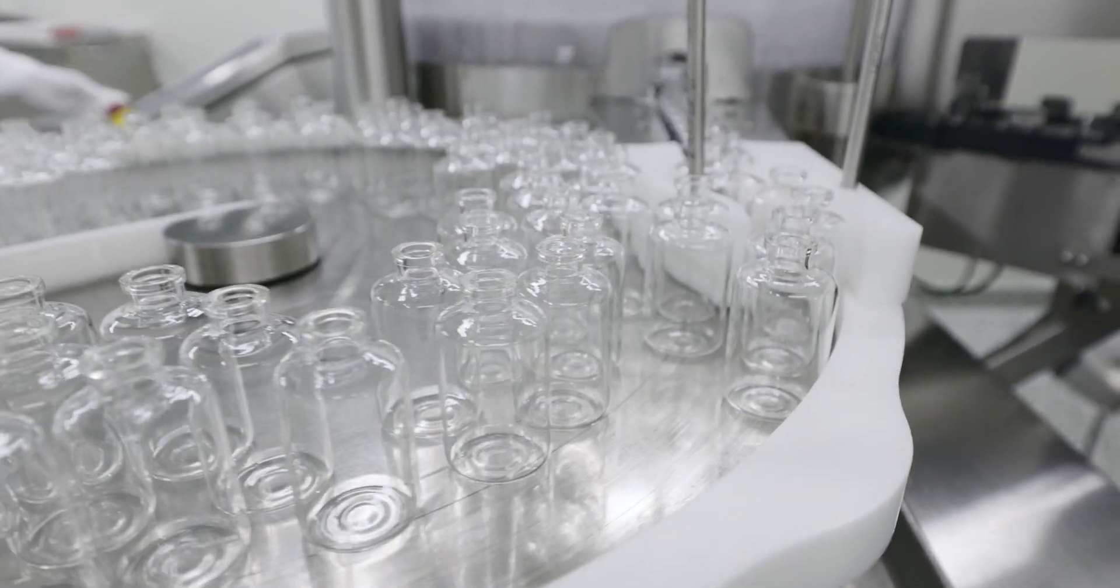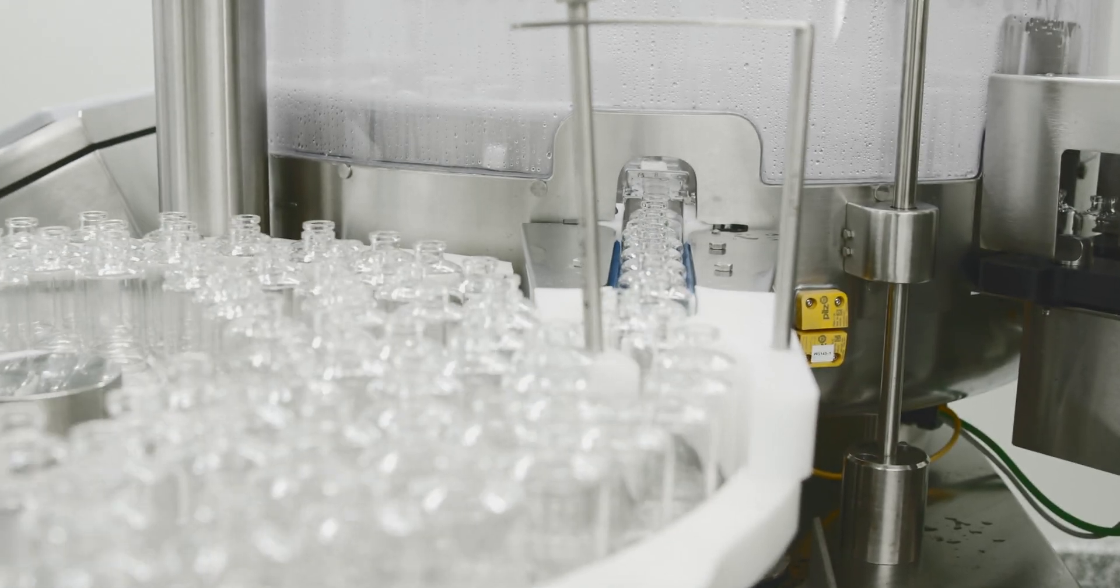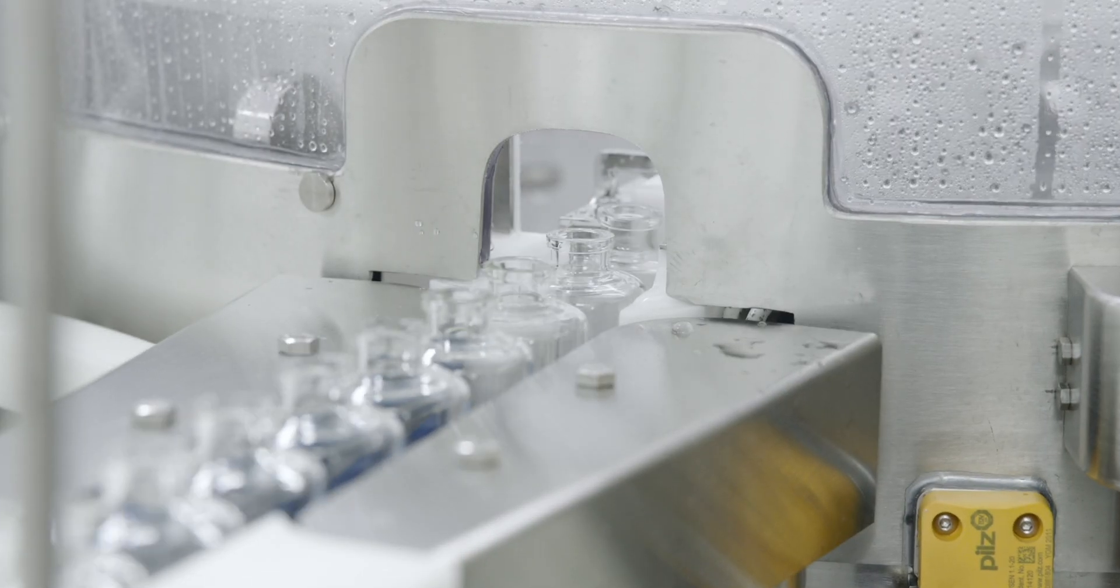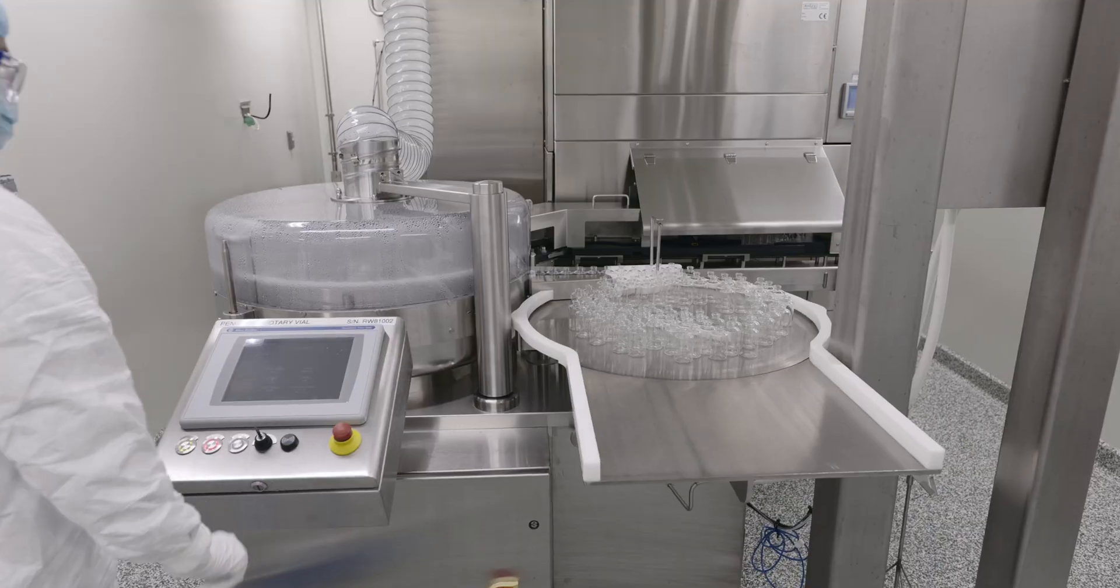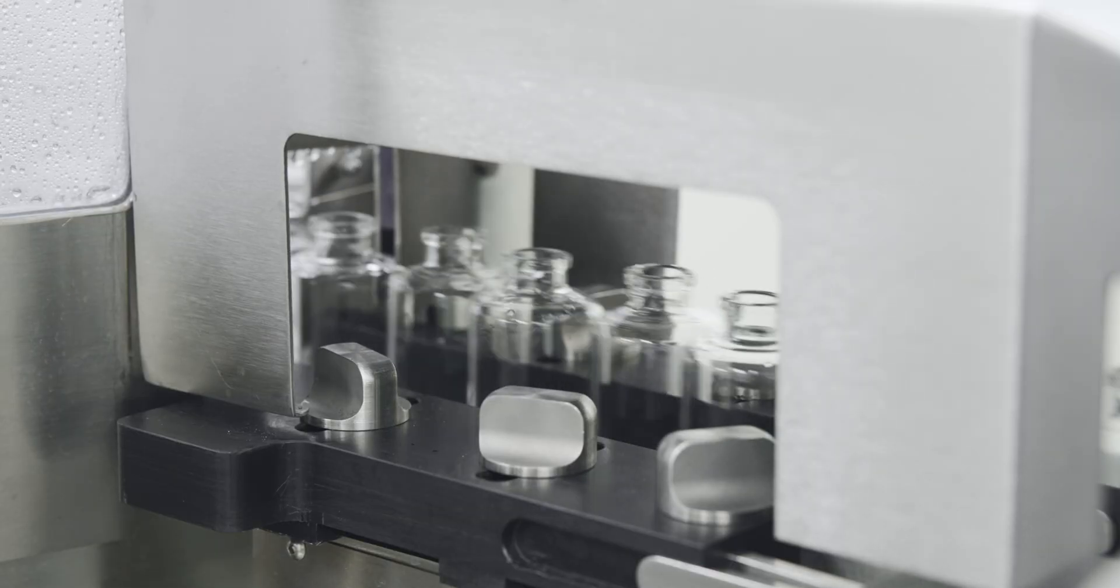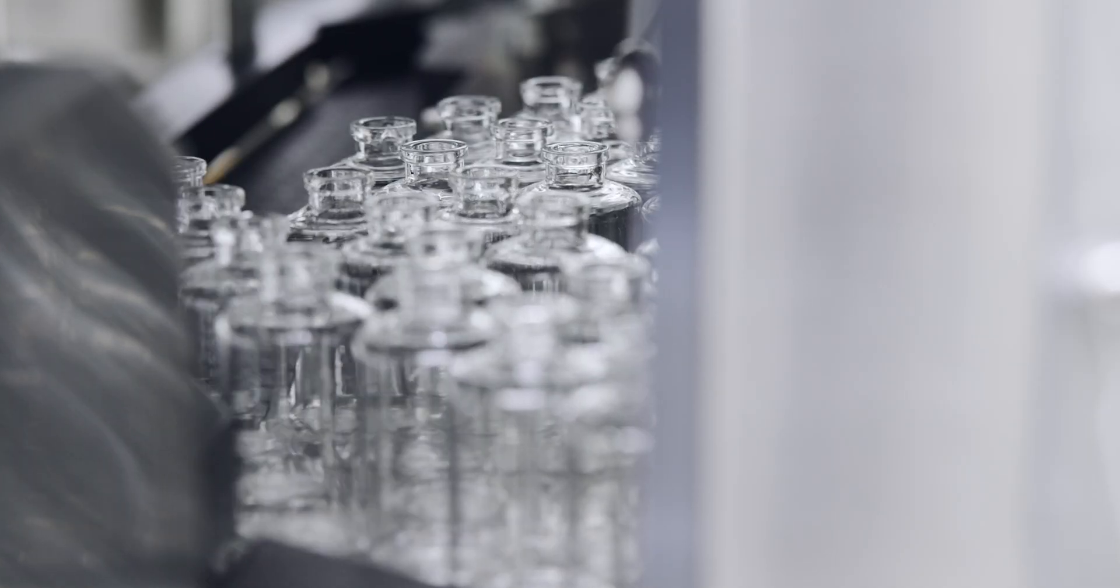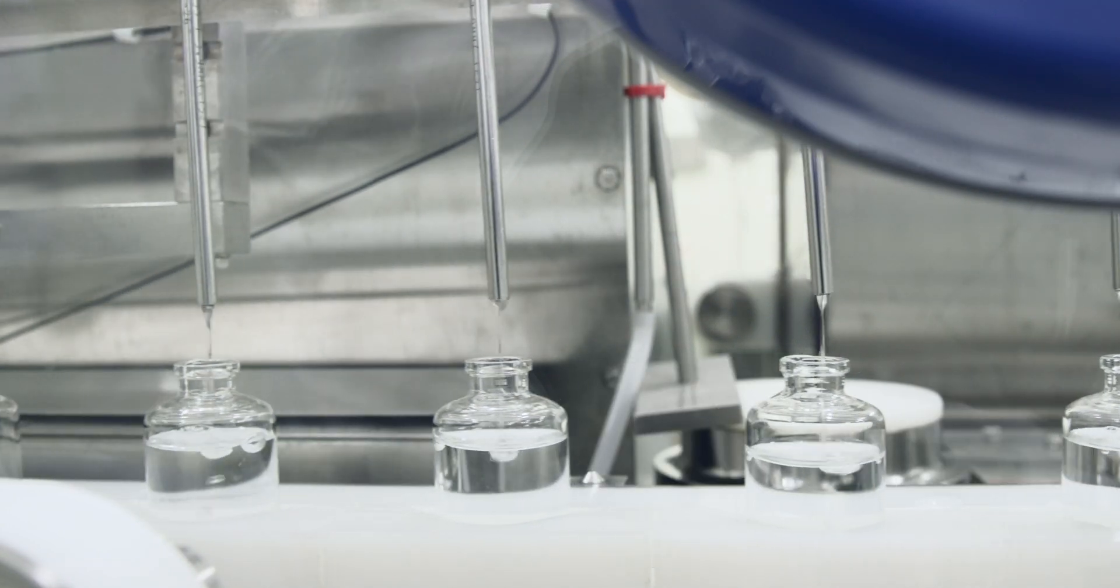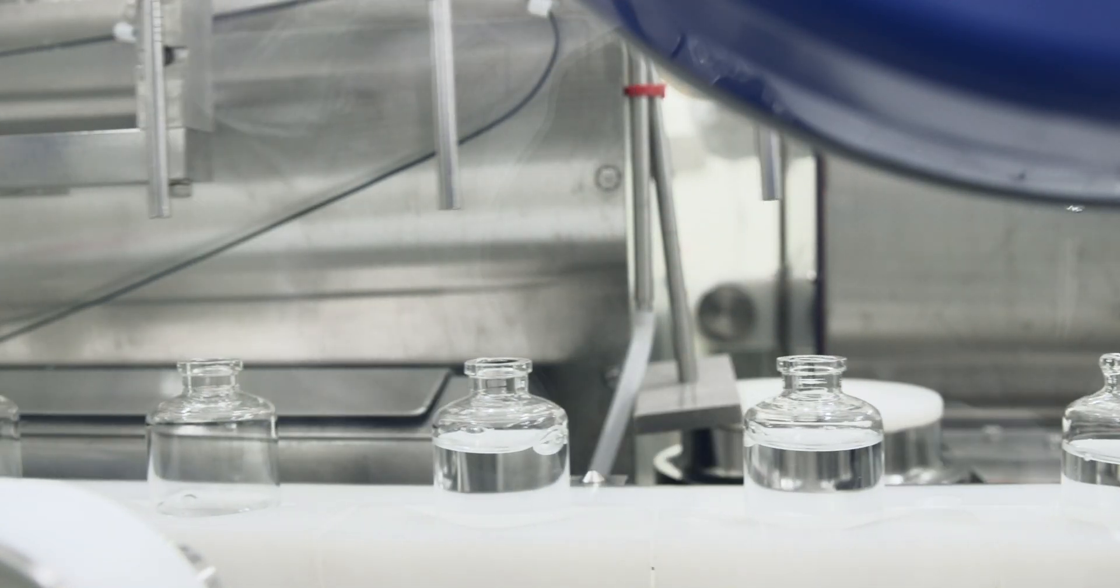Ready-to-use vials can be placed directly on the Bosch line. For ready-to-sterilize vials, PII has an integrated sterilization process whereby the vials are washed and sent through an integrated depyrogenation tunnel, which then loads directly to a turntable on the Bosch line. Vials are then conveyed to filling.